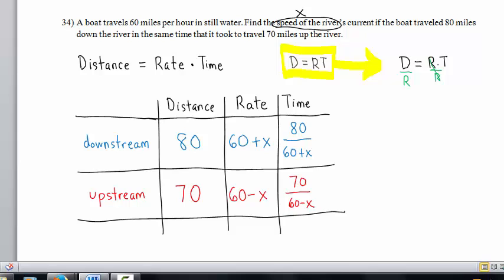Where does that get us? Well, we have a key word here. It takes the same amount of time to travel 80 miles downstream as it does to travel 70 miles upstream. In other words, these time expressions are equal. So we will set them equal to each other. So 80 divided by 60 plus x equals 70 divided by 60 minus x. And we must now solve this equation for x.